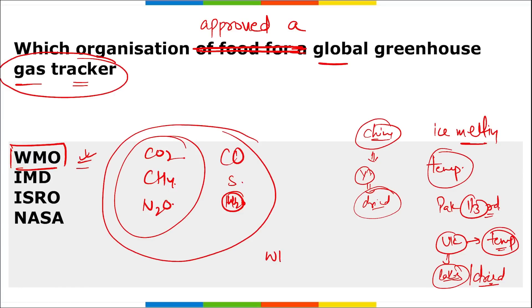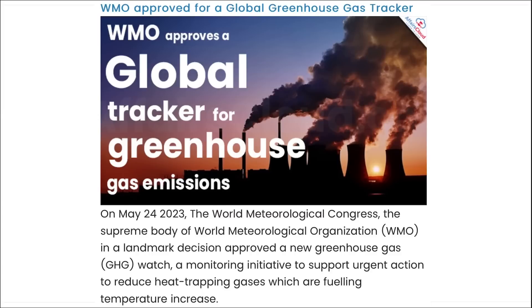Coming back to WMO: where is the headquarter of the World Meteorological Organization? It is in Geneva, Switzerland. Here you can see: WMO approved a global greenhouse gas tracker.